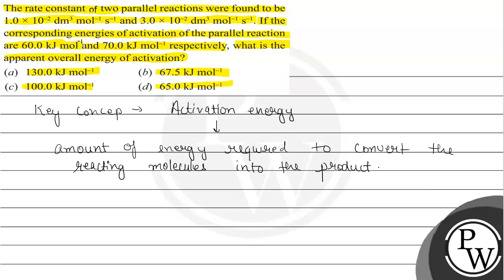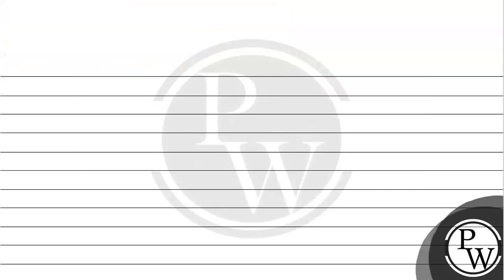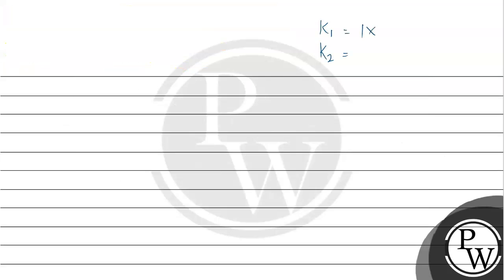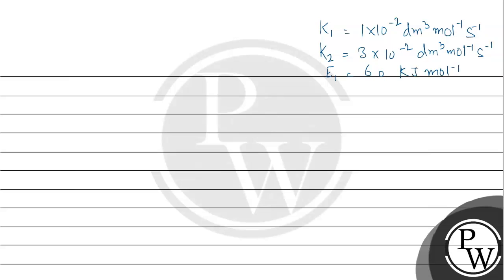According to the question, we have to find out the overall energy of activation, for which they have given us the rate constants of two parallel reactions. We have k1 = 1 x 10 raised to the power minus 2 decimeter cube per mole per second, and k2 = 3 x 10 raised to the power minus 2 decimeter cube per mole per second. The energies given are E1 = 60 kJ per mole and E2 = 70 kJ per mole.